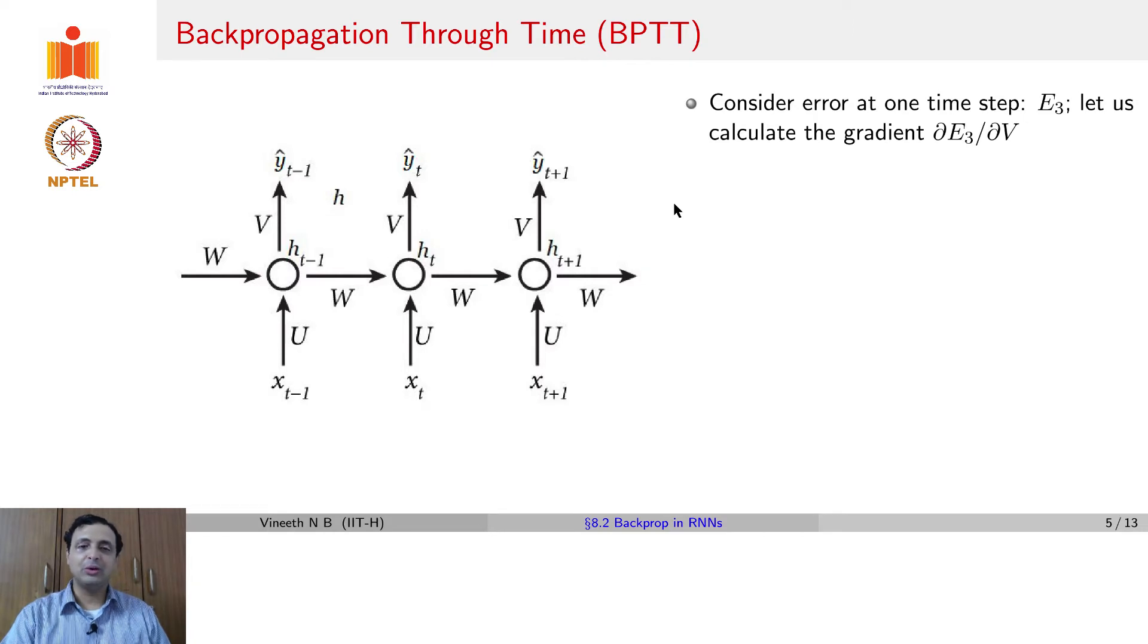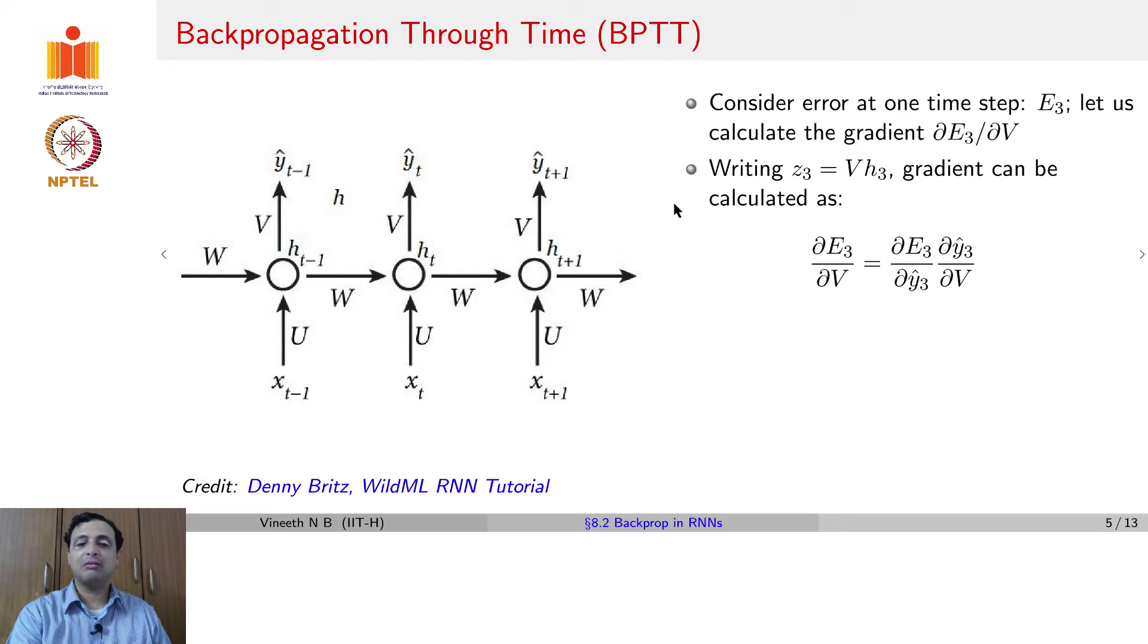Before we go into computing ∂E/∂W, let us take a simpler case, and try to compute ∂E/∂V. In particular, let us consider ∂E_3/∂V, which is the third time step. So to compute ∂E_3/∂V, let us assume that we can write Z_3 to be VH_3. Then the gradient can be computed as ∂E_3/∂V will be ∂E_3/∂Y_3hat into ∂Y_3hat/∂V. Now, Y_3hat is a softmax of Z_3. That is the way we have defined this network. So you would have this by chain rule as ∂E_3/∂Y_3hat into ∂Y_3hat/∂Z_3 into ∂Z_3/∂V.